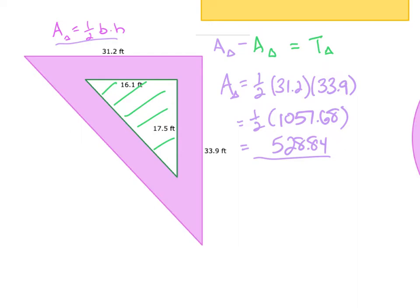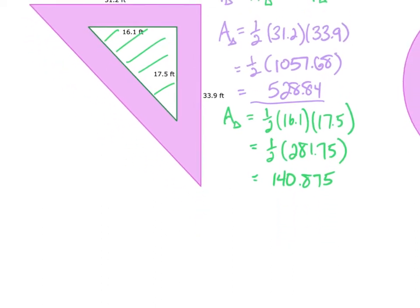Now let's figure out what the area of my green triangle is. So 1 half, my base here is 16.1. My height is 17.5. When I multiply this out, that is 281.75. When I take half of that, I get 140.875.